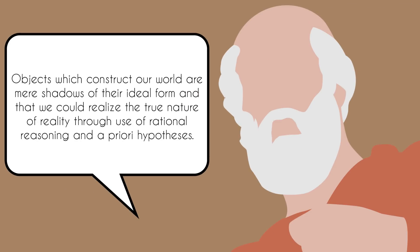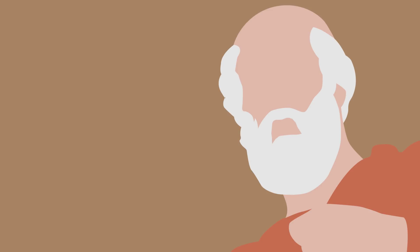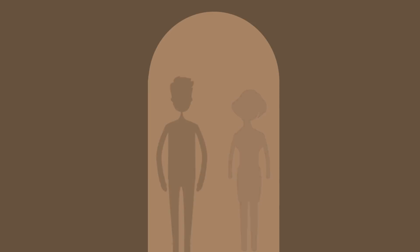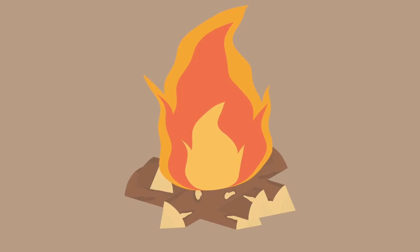Great philosophers of classical antiquity were the first thinkers who thought of the possibility that faith and authority are fallible, and truly discussed ways to acquire knowledge. Plato thought that objects which construct our world are mere shadows of their ideal form, and that we could realize the true nature of reality through use of rational reasoning and a priori hypotheses. Plato taught the doctrine of ideal form through his metaphor of the cave. He imagined a cave in which a person is only able to see the opposite side of the cave. The cave is echoing with sounds of distant voices, and this person can see the shadows on the wall. They are certain that these shadows present the reality. Plato then assumed that they are able to move. This person starts to explore the cave and becomes blinded with the light of fire. They are stunned when they realize that what they thought to be reality had been the mere shadows of objects in front of fire.